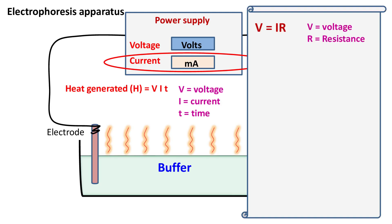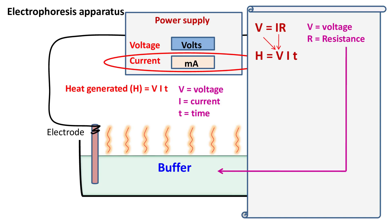Voltage V is equal to IR, where I is the current and R is the resistance. In electrophoresis, the resistance R depends on the type of buffer used, the ionic strength of the buffer, and the gel used. If we substitute this into the above equation, we get H = I²RT. Look at this term carefully — this shows that heat will increase four times if the current passing between the electrodes doubles. Hence, it is always advised to carry out electrophoresis at low current in order to avoid excess heat generation.